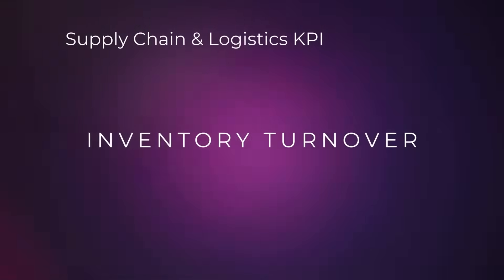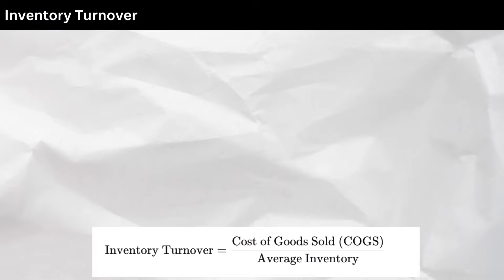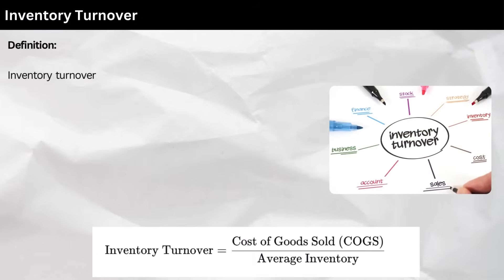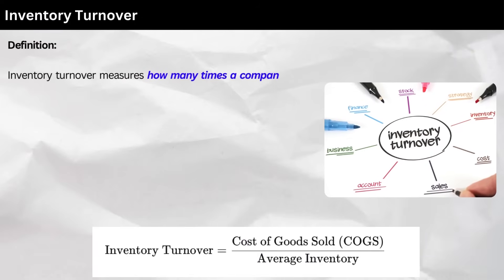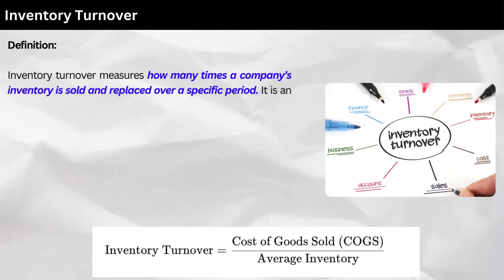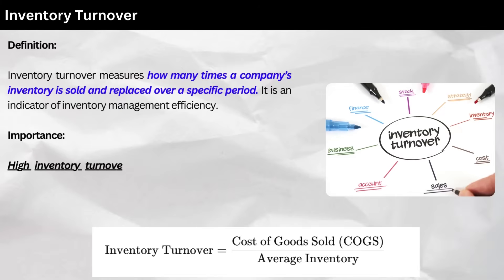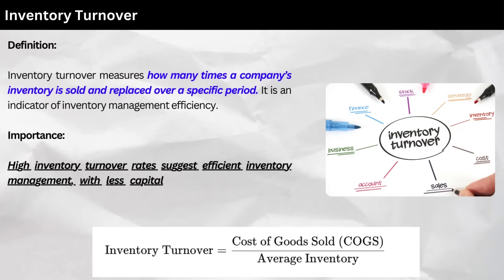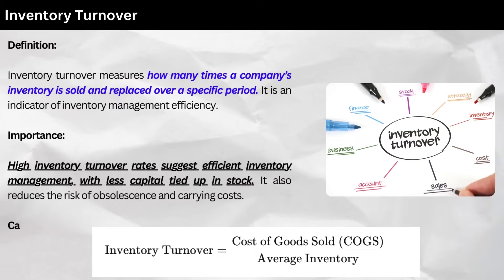2. Inventory Turnover. Definition: inventory turnover measures how many times a company's inventory is sold and replaced over a specific period. It is an indicator of inventory management efficiency. Importance: high inventory turnover rates suggest efficient inventory management, with less capital tied up in stock. It also reduces the risk of obsolescence and carrying costs. Calculation: as follows.